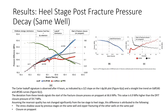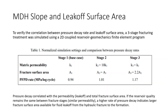To verify the correlation between the pressure decay and the leak-off surface area, a three-stage fracture treatment was simulated using a 2D coupled reservoir geomechanics and finite element program. The table shows the simulation settings and comparisons between pressure decay rates, including different matrix perm, fracture surface area, and post-fracture pressure decay rates per log cycle. The results show that pressure decay correlated with perm and total fracture surface area. If reservoir quality remained the same, a higher rate of pressure decay indicates a larger fracked surface area available for fluid leak-off from the hydraulic fracture to the formation.